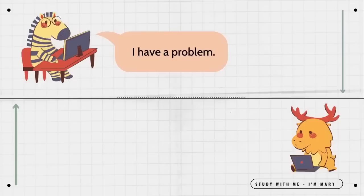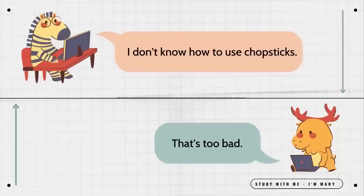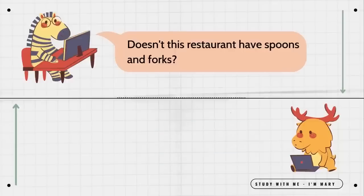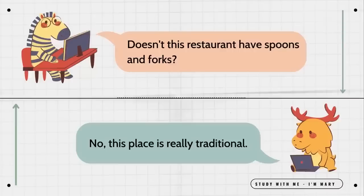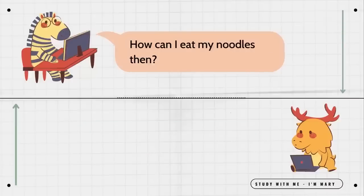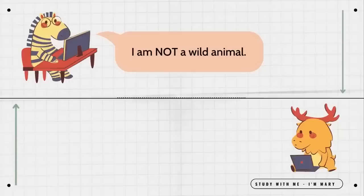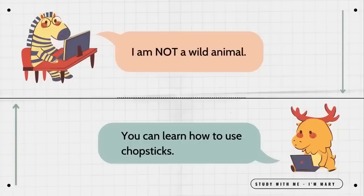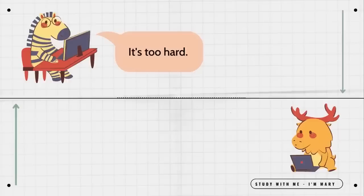I have a problem. What is wrong? I don't know how to use chopsticks. That's too bad. Doesn't this restaurant have spoons and forks? No. This place is really traditional. How can I eat my noodles then? You can use your hands. I am not a wild animal. You can learn how to use chopsticks. It's too hard. It's not. I'll teach you.